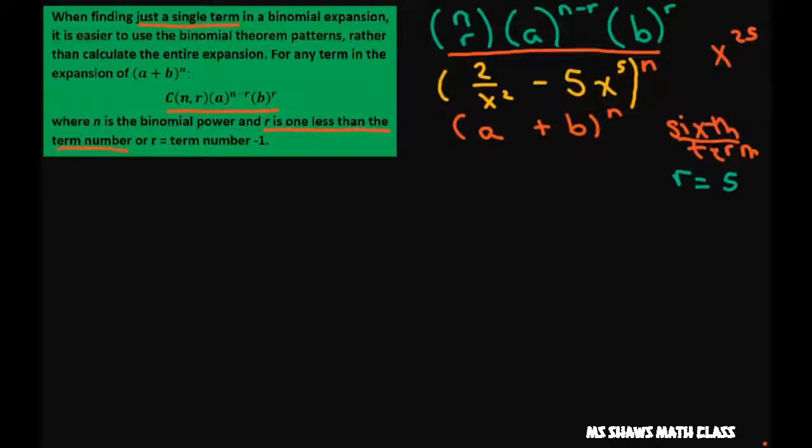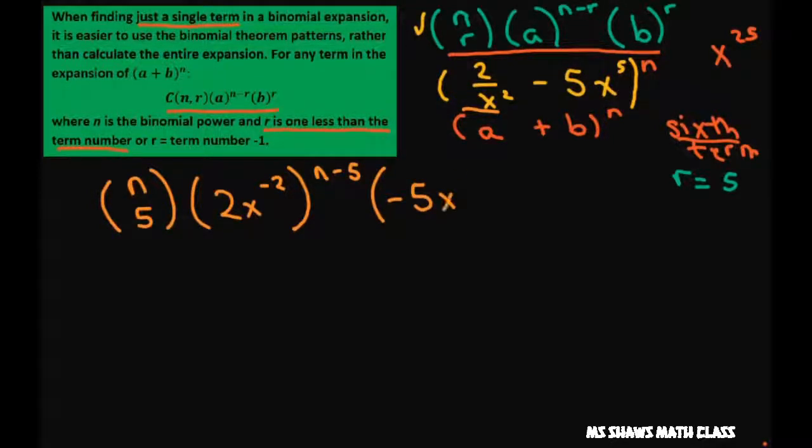And now we can do our problem and write this as n choose 5. Our a is 2x to negative 2, I just rewrote that, to the n minus 5. And our b is negative 5x to the 5th.